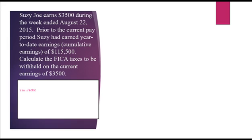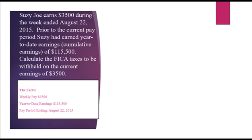Suzie Joe earns $3,500 during the week ended August 22, 2015. Prior to the current pay period, Suzie had year-to-date cumulative earnings of $115,500. Calculate the FICA taxes to be withheld on the current earnings of $3,500. Weekly pay is $3,500, year-to-date earnings prior to this paycheck are $115,500, and the pay period ends August 22. We can tell we are getting close to the wage base of $117,000, so this is how we would calculate FICA tax.